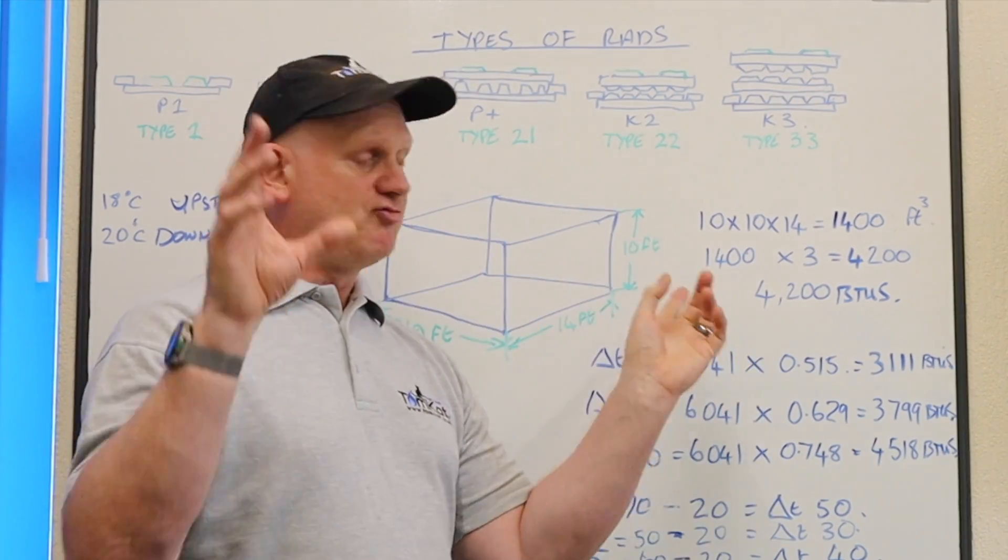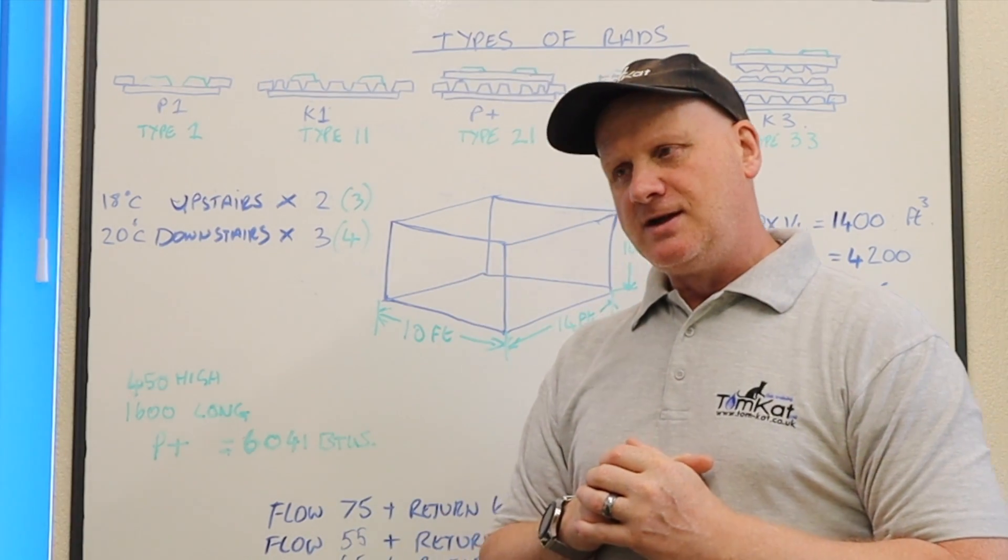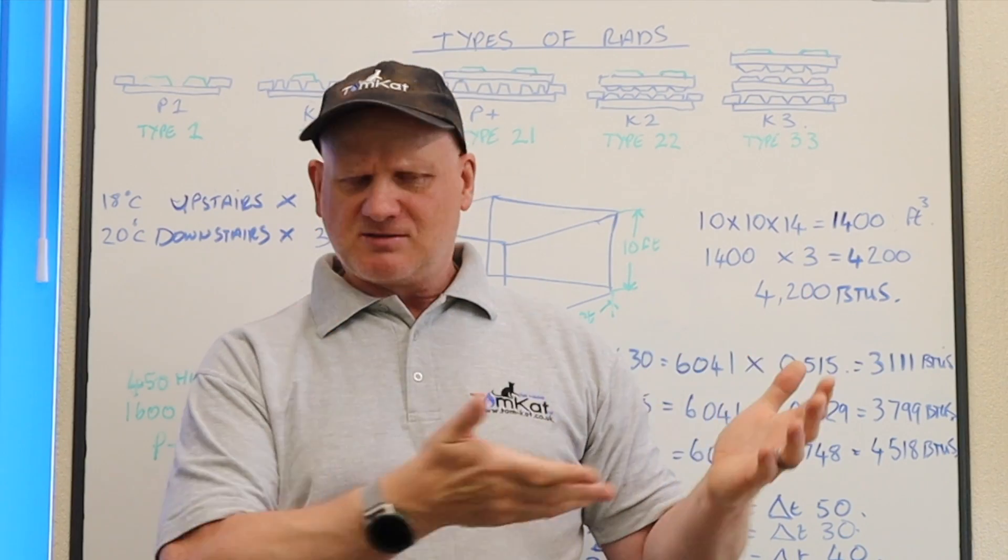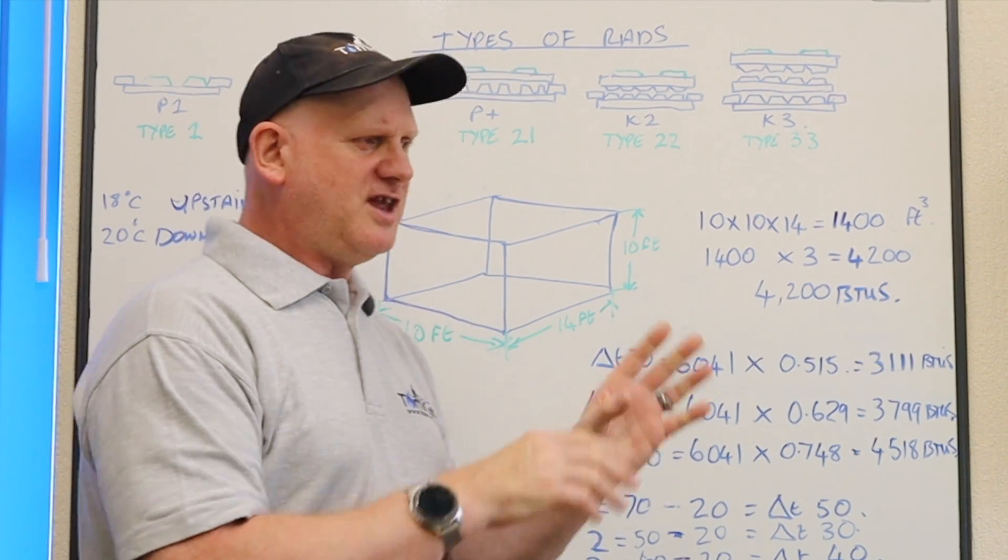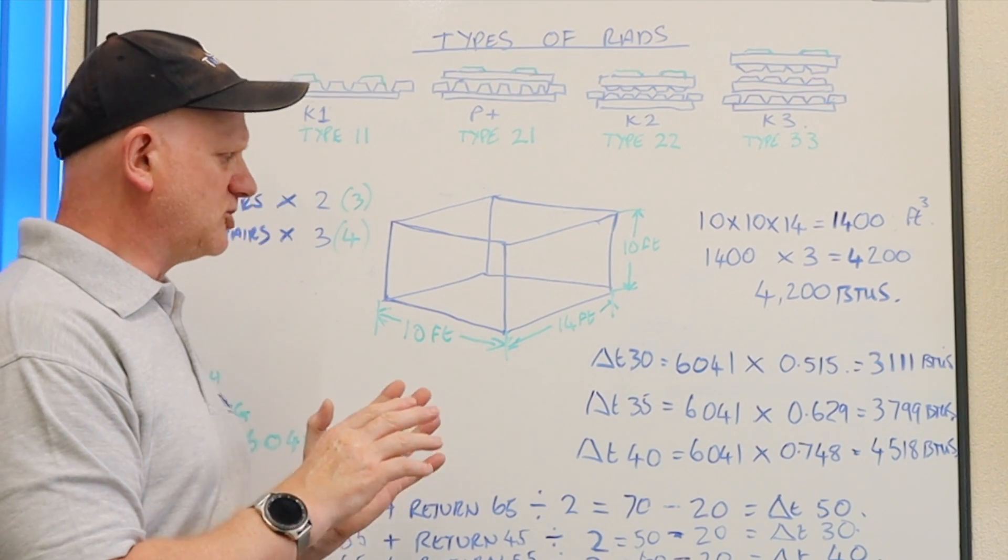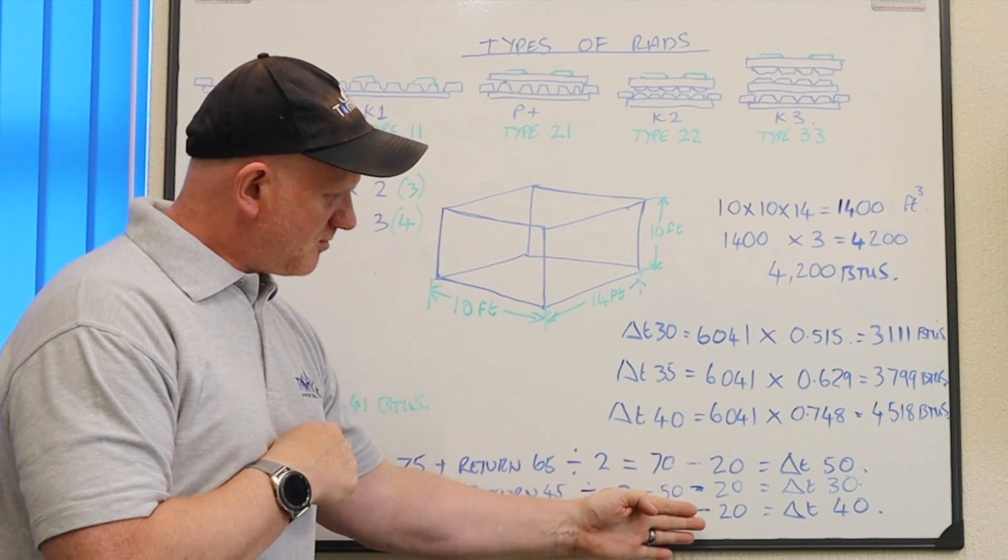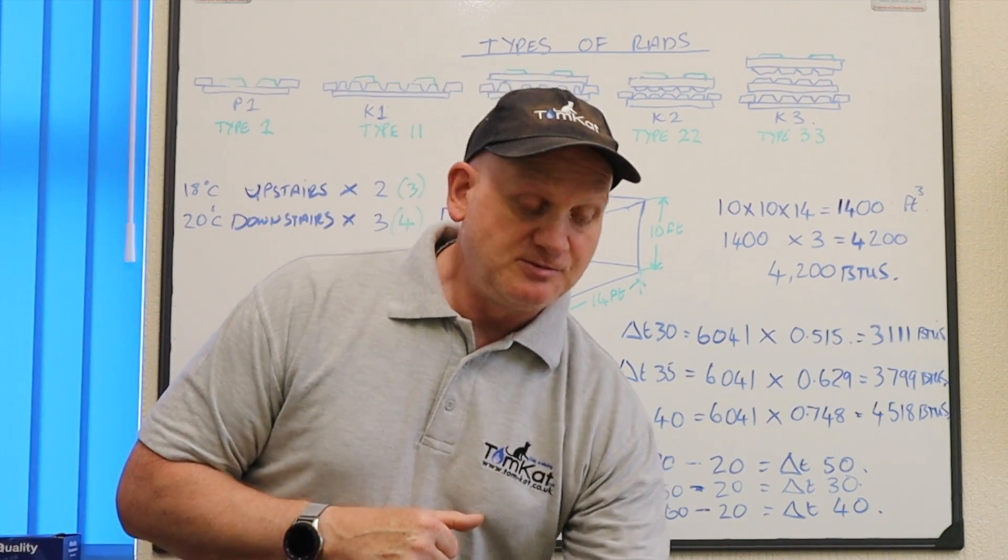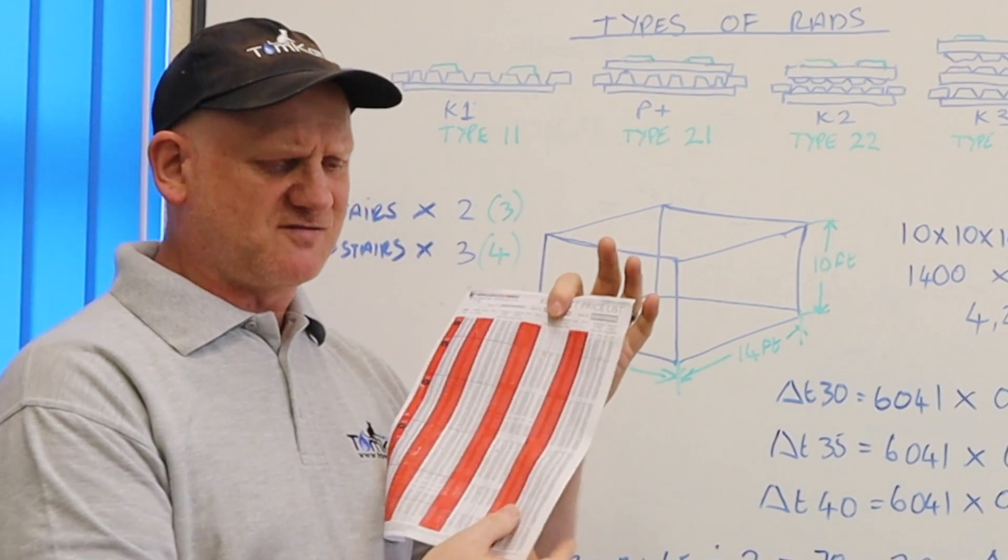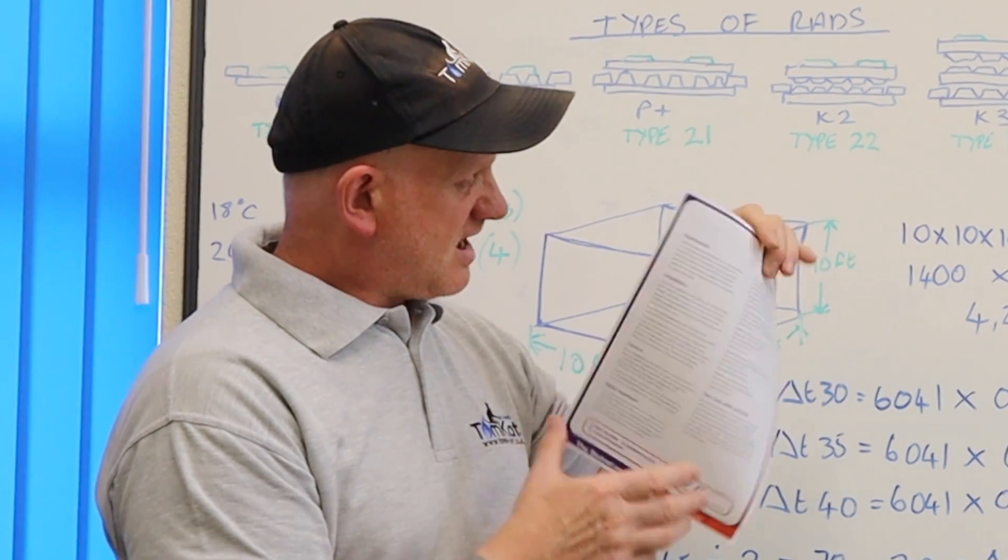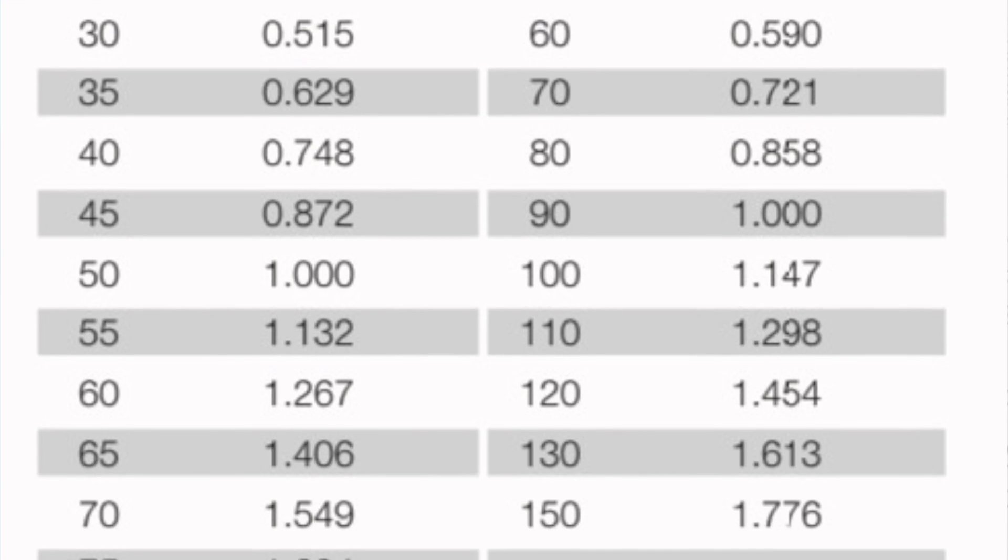Now I've said this radiator catalog has a delta T of 50 and 60, so I can't size the radiators from that. But Stellrad radiators have given us this technical information sheet where you can use a figure to help us to resize the radiators from their catalog. Now if we're looking at a delta T of 30, we look down this left-hand column here, so we get a delta T of 30. We look across in our centigrade, and it gives us a figure of 0.515.